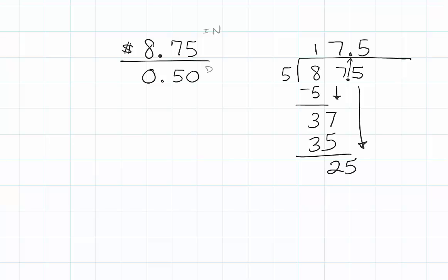So $8.75 divided by 50 cents equals 17.5. That's pretty much it. Just remember your place values and where to move the decimals. These two examples will get you through anything you need to multiply or divide with decimals.